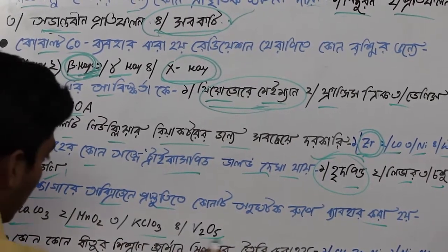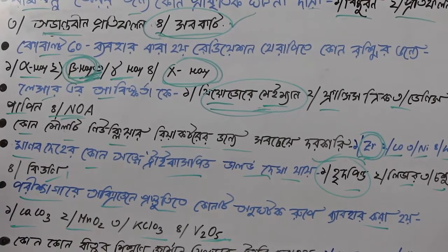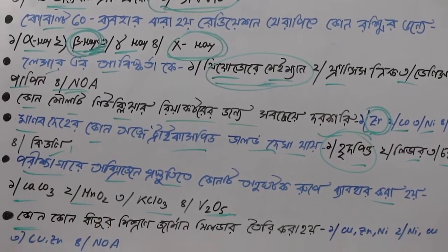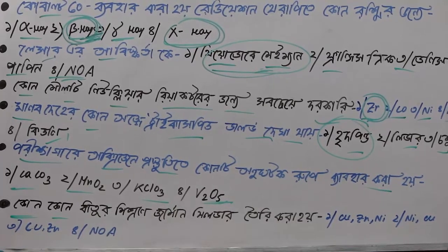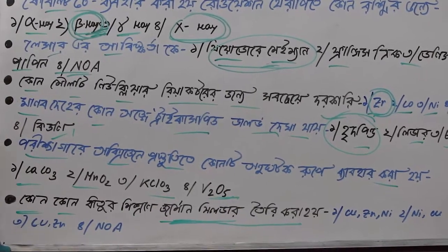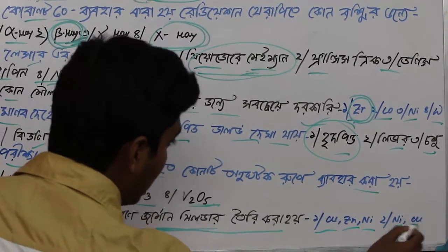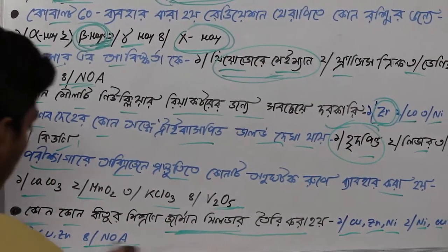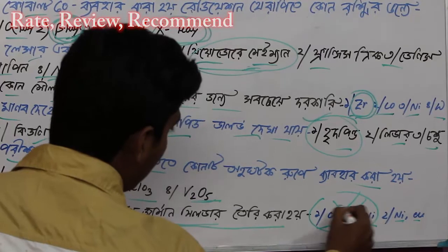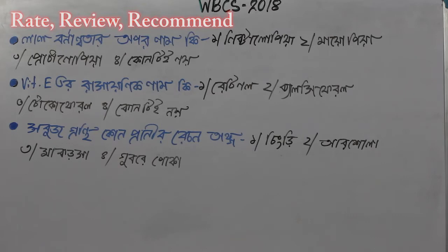The next question is about German silver. German silver is an alloy. The options for its composition are: copper, zinc, nickel. The correct answer is that German silver is composed of copper, zinc, and nickel — all three components together.